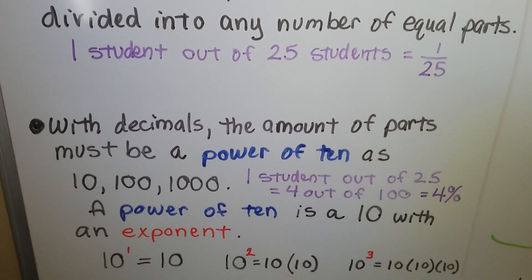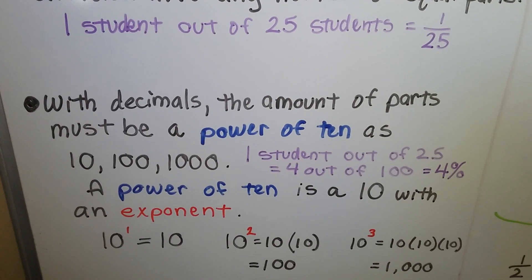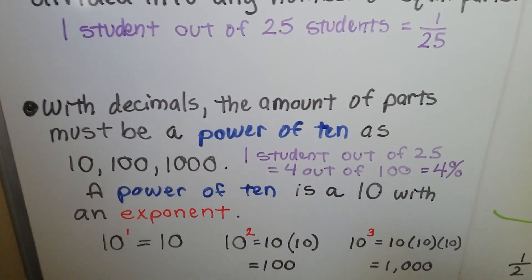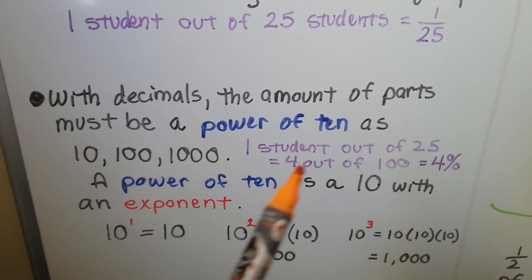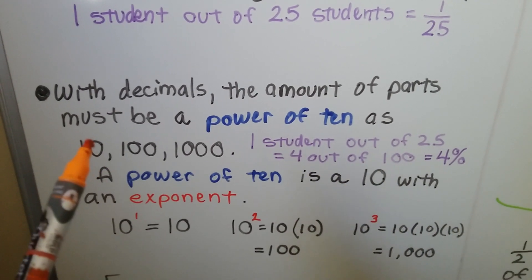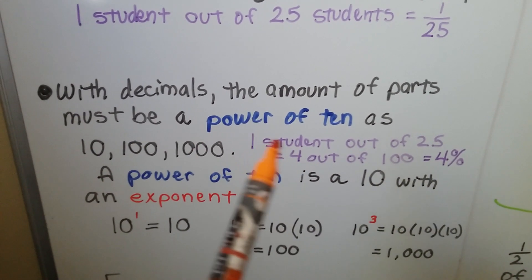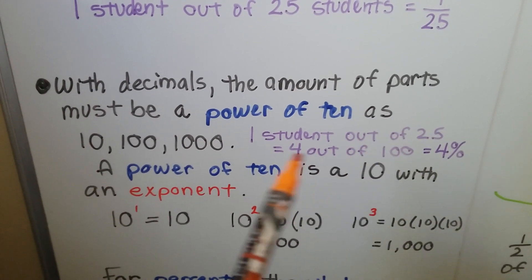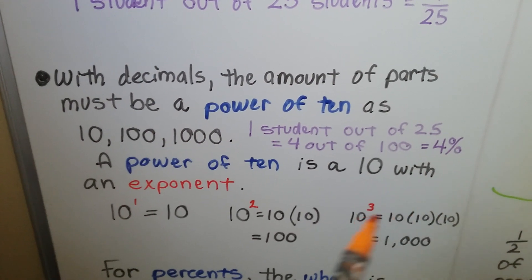With decimals, the amount of parts must be a power of 10 as 10, 100, 1000. So one student out of 25 would have to be 4 out of 100. It's got to be out of 10, 100, or 1000. You can't say 1 out of 25, you would have to say 4 out of 100. That would be 4%.